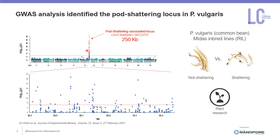As a proof of principle case, we took a genomic region in Phaseolus vulgaris that has been associated with pod shattering. This region was identified in a genome-wide association study by comparing recombinant inbred lines with shattering or non-shattering phenotype derived from the cultivar Midas. The region is 250 kb long and is located at the end of chromosome 5.